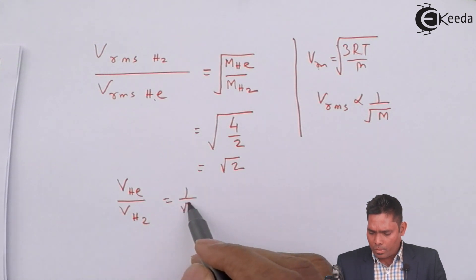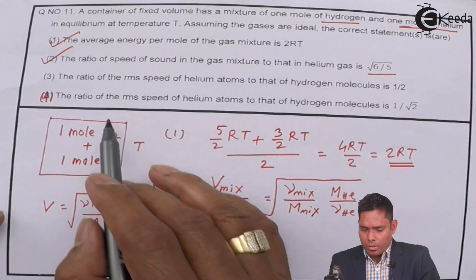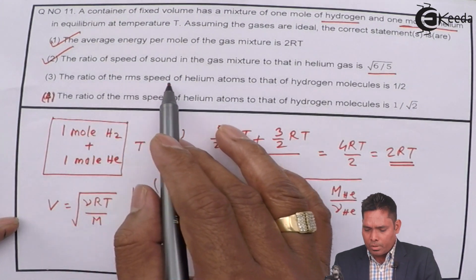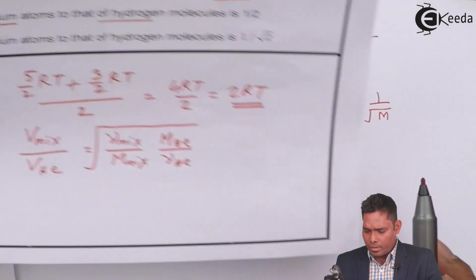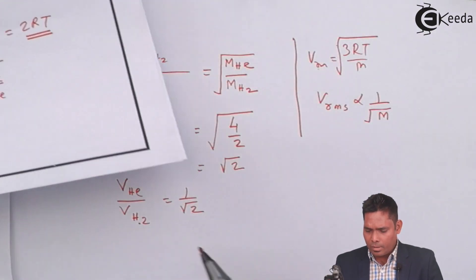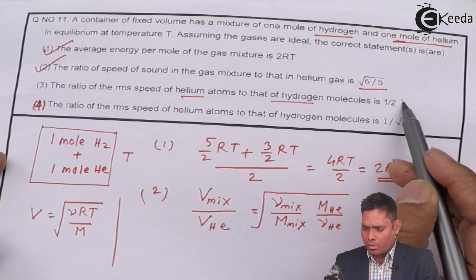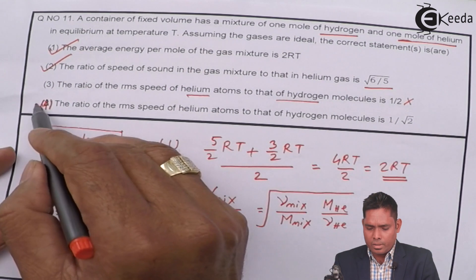Therefore, if I write the reciprocal of this, Vrms for helium to that of Vrms for hydrogen will be 1 upon root 2. The ratio of RMS for helium to that of hydrogen is 1 by root 2. Option 3 says 1/2, so it is wrong. 1 by root 2 is right, so option 4 is correct.